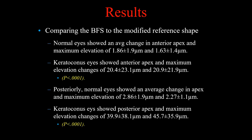The maximal elevation change in normal eyes was less than 2 microns on the anterior surface, while in keratoconic eyes it was over 20 microns. On the posterior surface, the change was less than 3 microns in normals versus roughly 40 microns and above in keratoconic eyes — highly statistically significant. Graphically, the separation is clear: green represents normal, red represents keratoconic eyes, both at the apex and at maximal elevation difference.